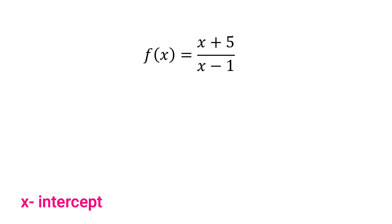First example: f(x) = (x + 5) / (x − 1). Recall that step 1 is to reduce the rational function to lowest term. Since both the numerator and denominator are not factorable anymore, we proceed to step 2: equate the rational function to 0. So we have (x + 5) / (x − 1) = 0.